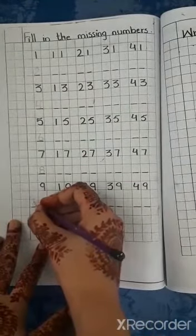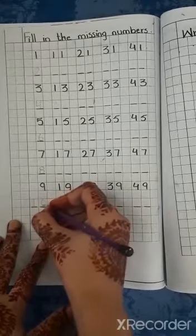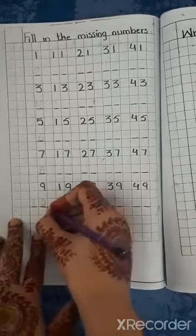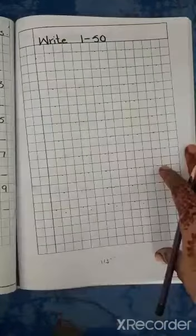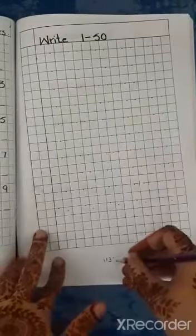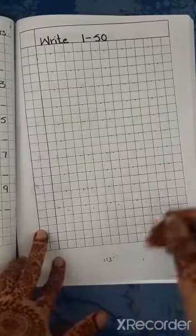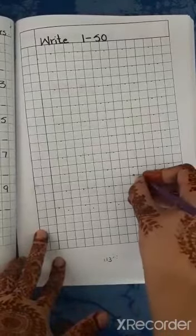9, 9 के बाद आता है 10, 10 is missing number. Now do the rest of page as your homework. Open page number 113. 113 is your homework.